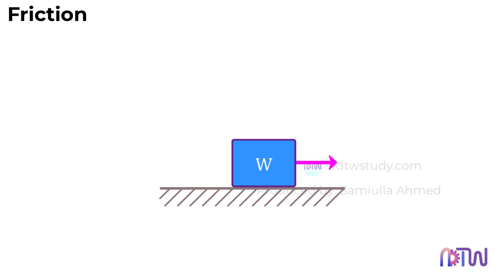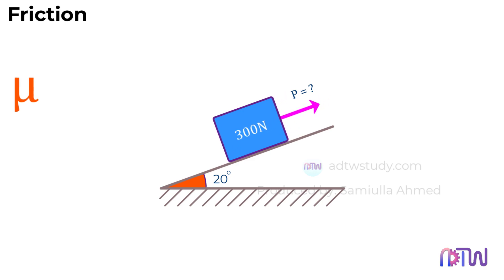Suppose this box is resting on a plane inclined at 20 degrees. In this case, how much force is required to pull the box? Let's understand this. Consider the weight of the box to be 300 newtons, and the coefficient of friction between the box and the inclined surface to be 0.14.